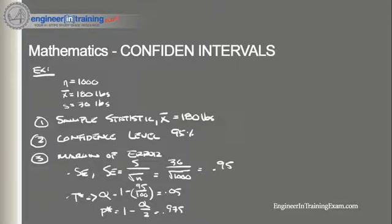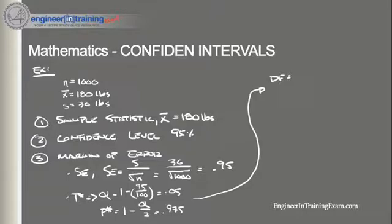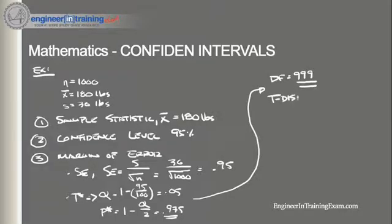Now we need to find the degrees of freedom. Our sample size is 1,000, so degrees of freedom equals 1,000 minus 1, which is 999. Now we need to find the critical value — the t-score having 999 degrees of freedom and a cumulative probability equal to 0.975. We go to the t-distribution tables, and we find that the critical t-score, t-star, is 1.96.